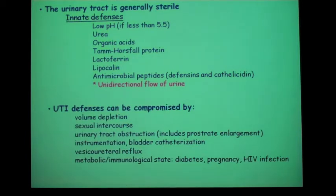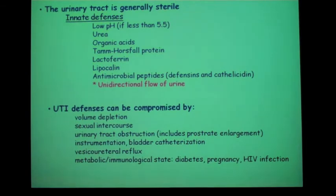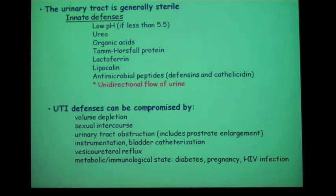Things that can compromise UTI defenses include volume depletion, sexual intercourse introducing pathogens, and anything that obstructs the urinary tract, such as prostate enlargement, which impedes urinary flow. Catheterization can bring in pathogens. Abnormal reflux into the bladder — an inherited condition in some people — can increase the risk of UTI. Many metabolic states also increase one's risk for UTI.